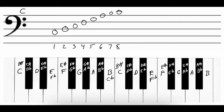The interval between the first and the second note, C and D, is a whole step because we skipped over that C-sharp or D-flat. The interval between the second and the third note, D and E, is a whole step because we skipped over the D-sharp or E-flat. The interval between the third and the fourth note, E and F, is a half step because there is no note in between — they're right next to each other. The interval between the fourth and the fifth note, F and G, is a whole step because we skipped over the F-sharp.